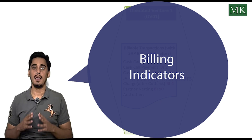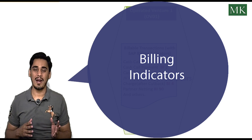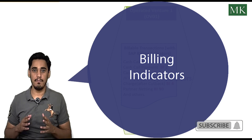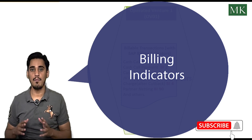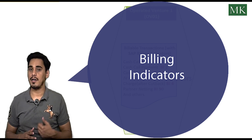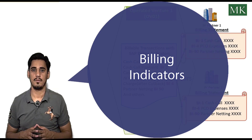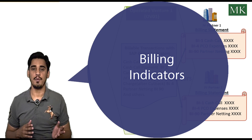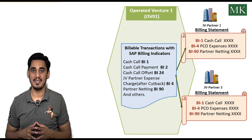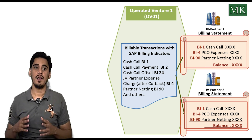First, it is important to understand the functionality of billing indicators before explaining the cutback transaction. In SAP Joint Venture Accounting, billing indicators are assigned to billable postings and are used to identify the type of postings involved — like cash call, normal expenditure, or audit adjustment — which are later used to prepare the joint venture partner billing report in hard copy or EDI format.